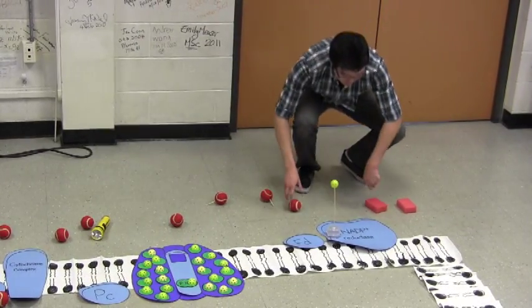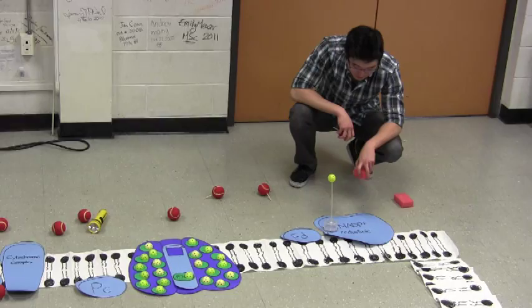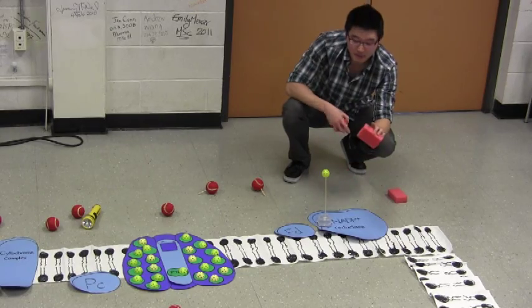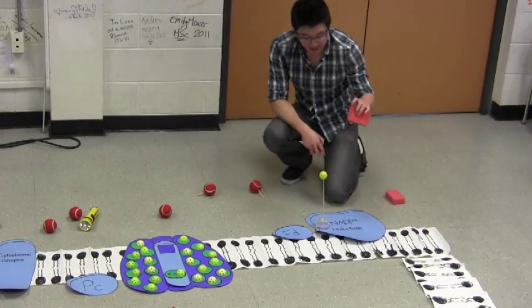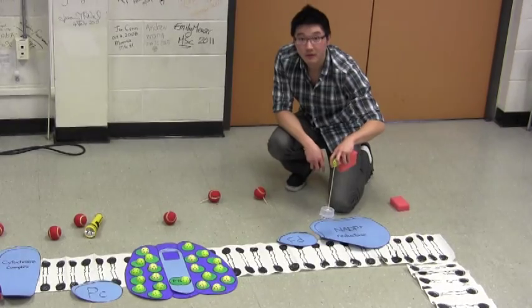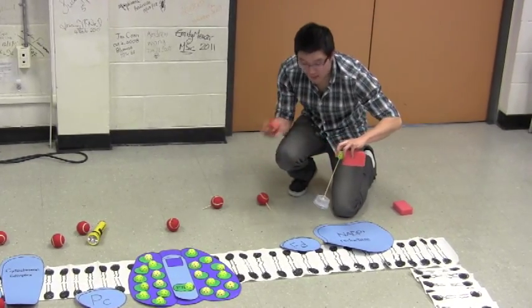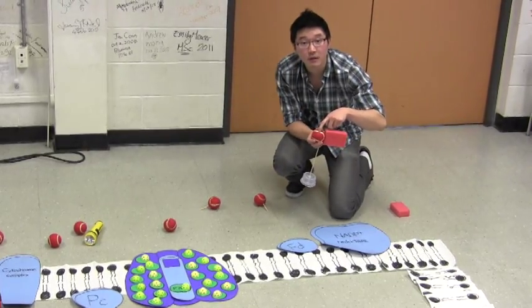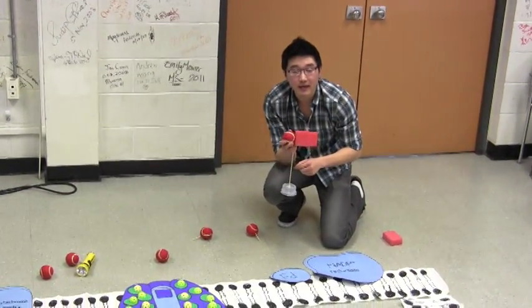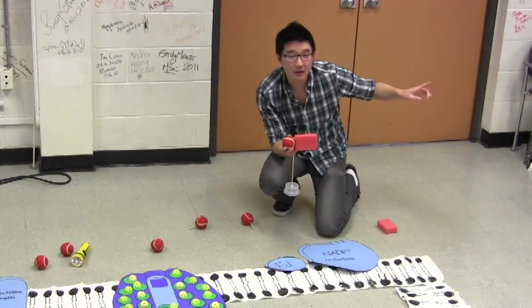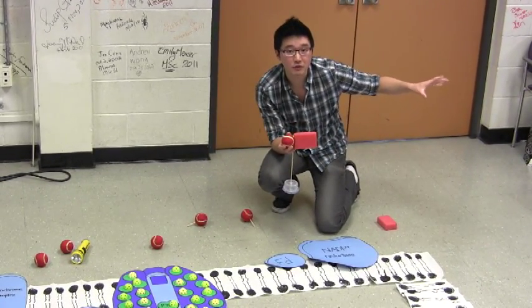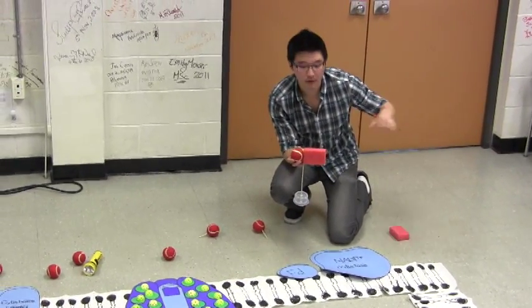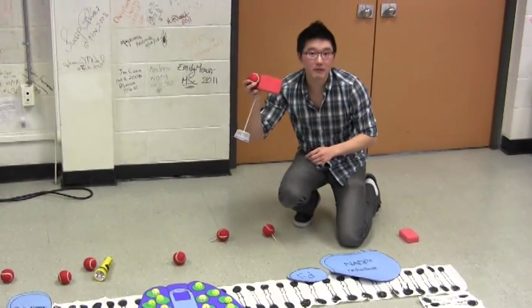What NADP+ reductase does is it takes NADP+ and it reduces it by adding electrons. So NADP+ takes two of these high-energy electrons and one hydrogen ion from the stroma to form NADPH. NADPH is a high-energy electron carrier and these high-energy electrons will later in the Calvin cycle be used to make the precursors for glucose. These electrons get put as high-energy electrons into glucose. So this is one important product of the light reactions made.